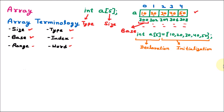The next term is range. Range signifies from where the index starts and where it ends. With size 5, the array index starts from 0 and goes till 4 — so the range is 0 to 4. Index: all elements of the array can be accessed using the index. The index values are 0, 1, 2, 3, and 4 — also called indices.